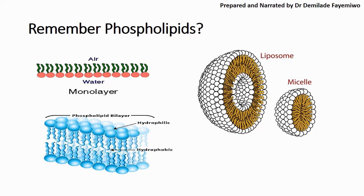What this basically means is that there are two sets of phospholipids. The phosphate heads are on the outside while the hydrophobic tails, which are the lipid tails, are on the inside. And this is how the cell membrane is able to regulate the things that are able to travel through it.